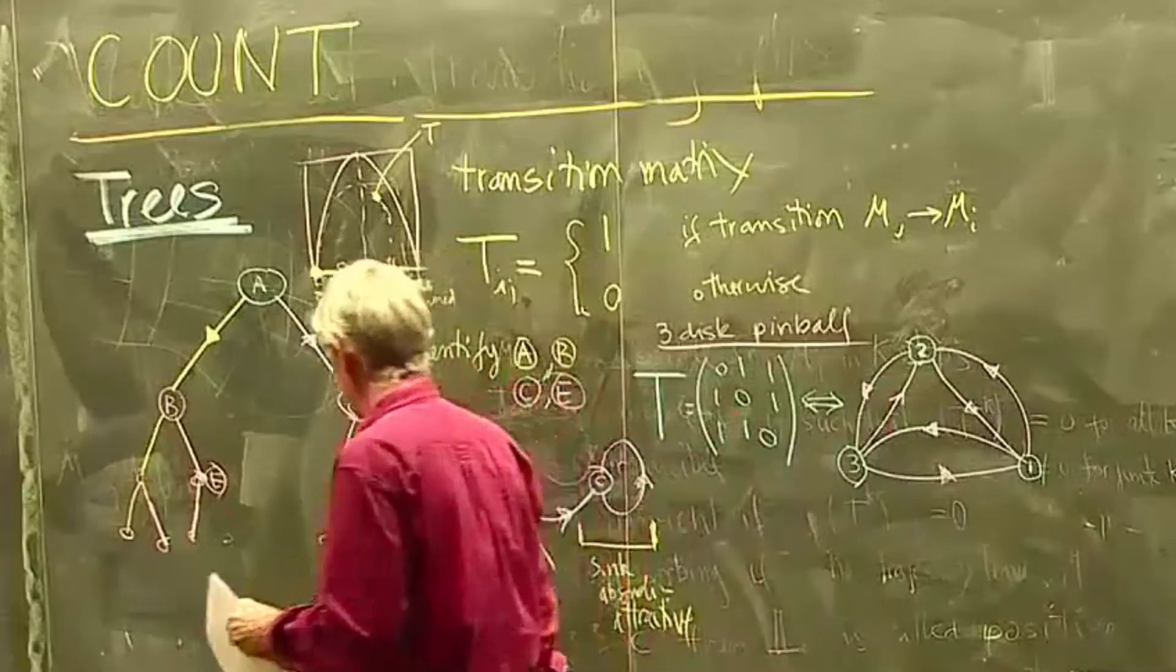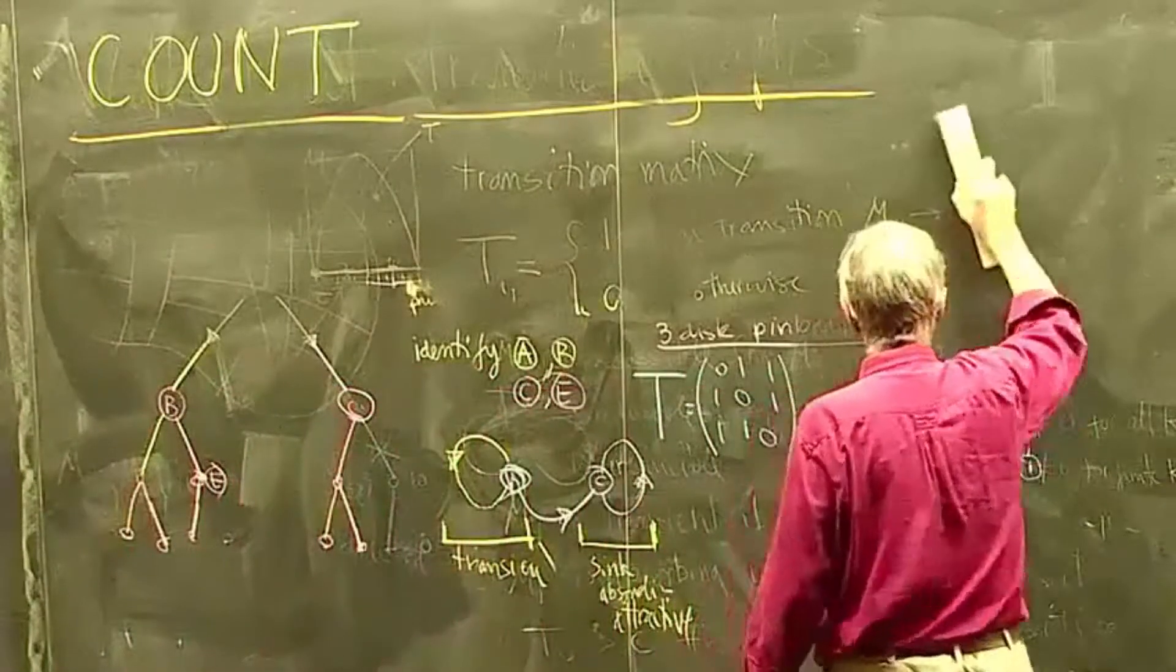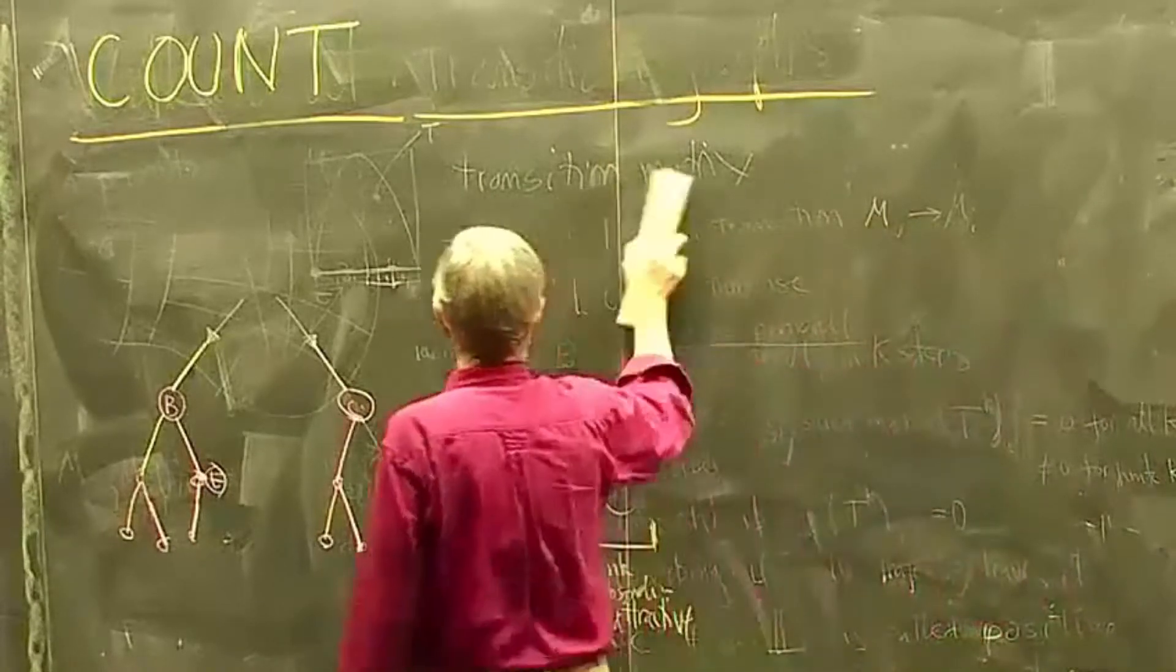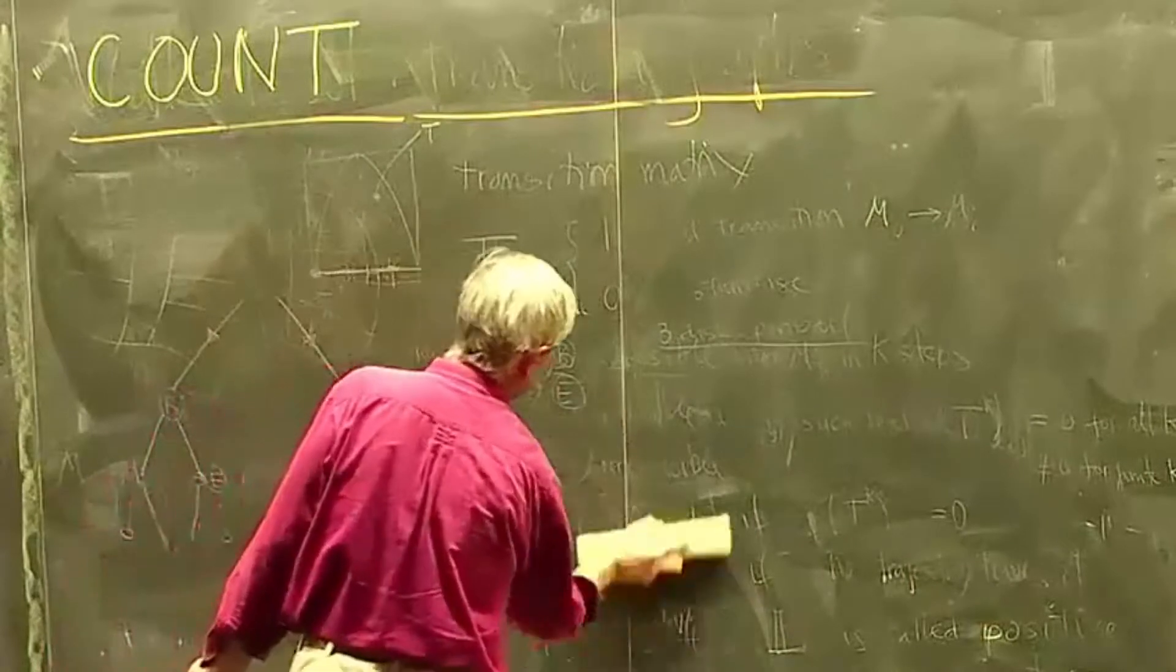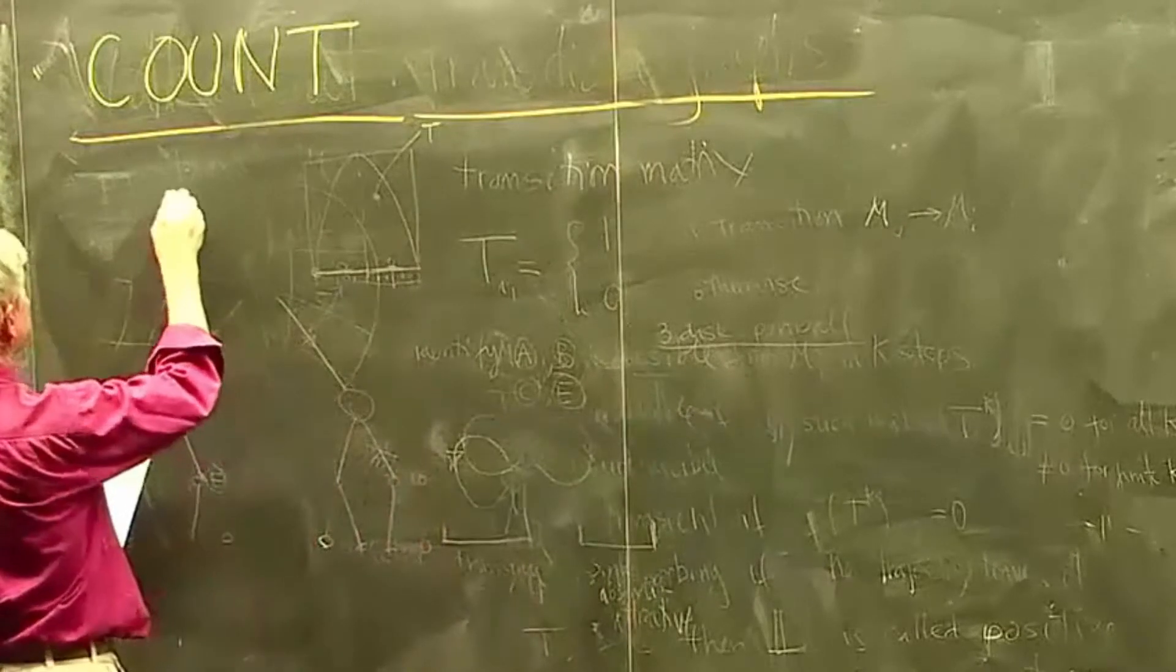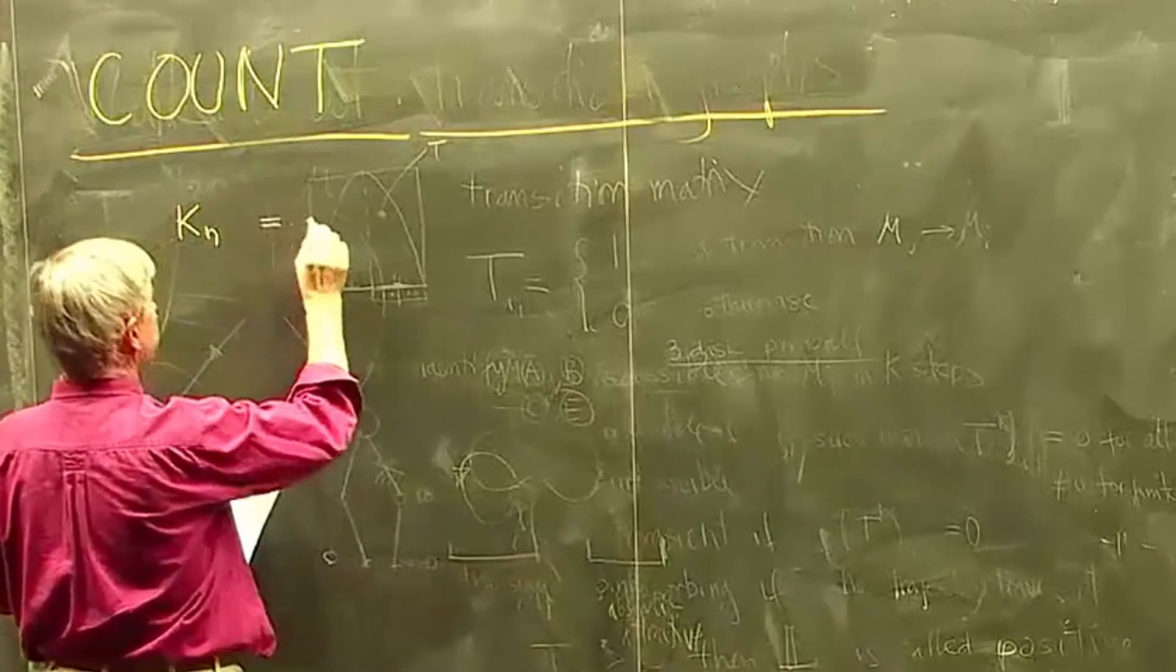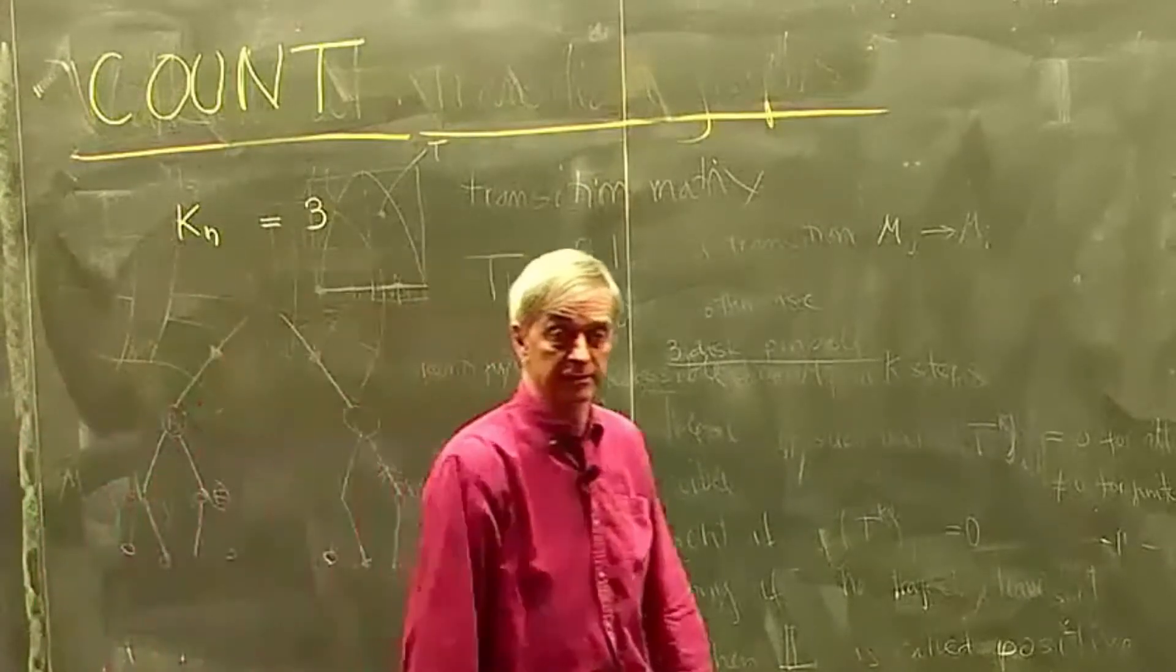In the three-disc example, we have already done this because that's very simple. So it was just a problem set on counting all possible ways of bouncing around three discs. So for three discs, there was a number, kn, which said I can start on one of the three discs. So I have three choices in the beginning.